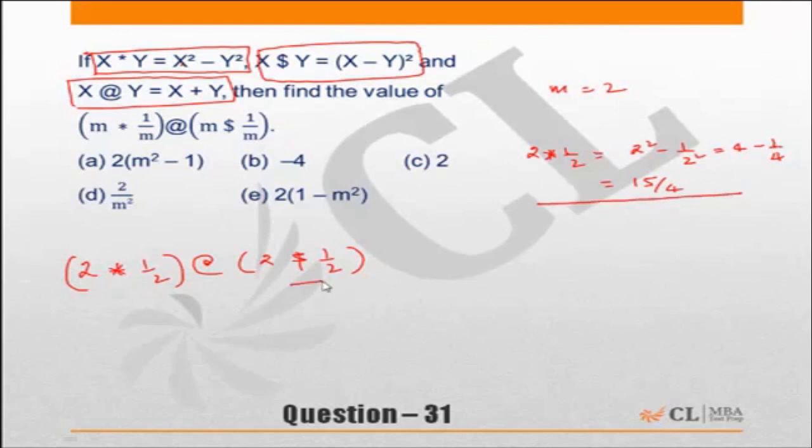The other one is 2 dollar 1 by 2. 2 dollar 1 by 2 will be 2 minus 1 by 2 whole square, which is equal to 3 by 2 whole square, which is nothing but 9 by 4.